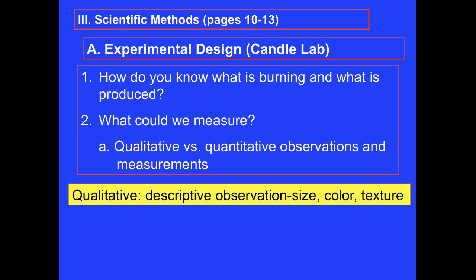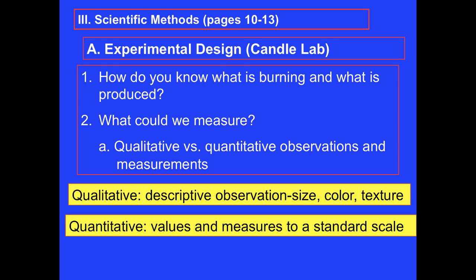When we make qualitative observations, we are looking at things like size, color, or texture. We are making descriptive observations about the quality of the things we are looking at. Quantitative observations, on the other hand, deal with numbers. We measure things based on some sort of standard scale. For example, we might take the mass of something or record how long something takes to happen.